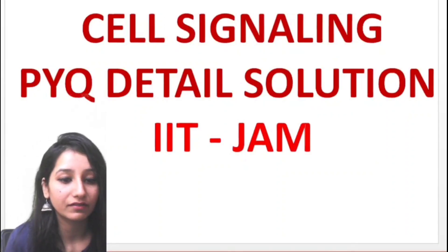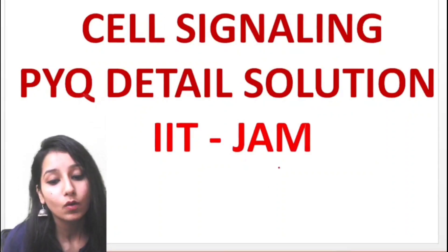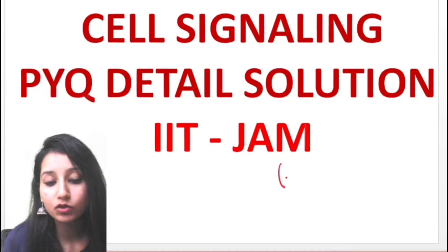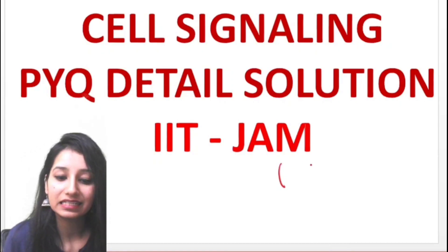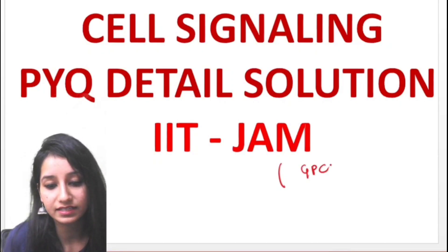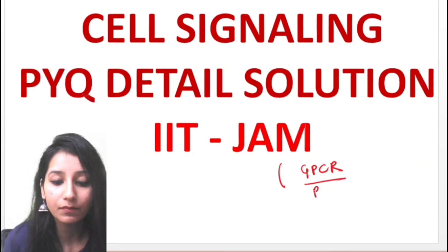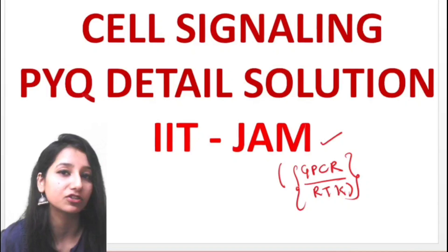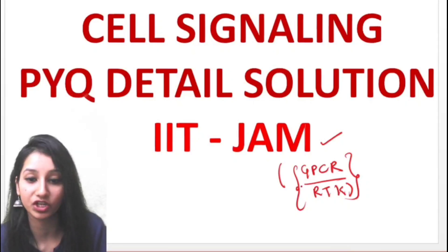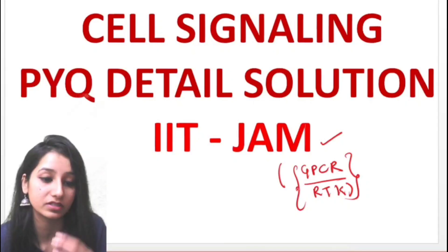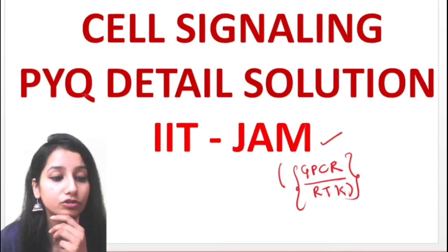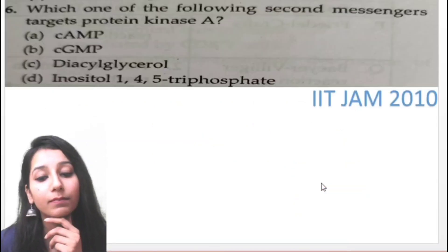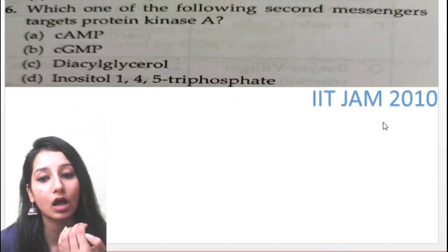Here we are going to see about IIT JAM. In IIT JAM, the questions related to cell signaling are from two types: GPCR signaling and RTK signaling. These are two types of signaling which have been asked in previous years in IIT JAM. So let's take a look at the questions. The oldest question we are going to see is IIT JAM 2010.